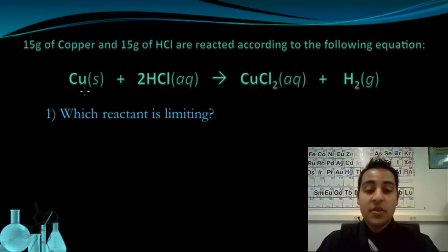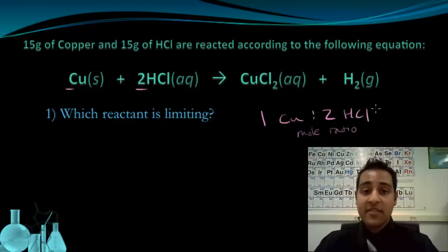We want to figure out which one of these is limiting. To figure that out, we first have to look at the balanced chemical equation. So this is balanced. We know that there are two hydrochloric acid for every one copper. So that's the mole ratio, one copper to two hydrochloric acids. Now that we've identified this, we should take our measured amounts, 15 grams of each, and change those into moles, so we can see how many moles of each substance we're putting into this reaction.